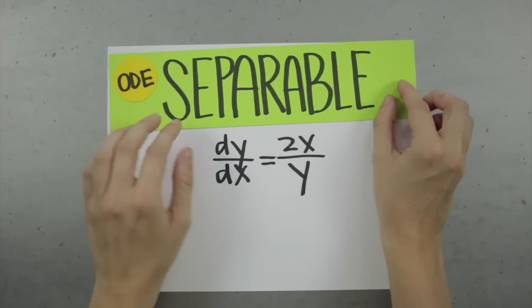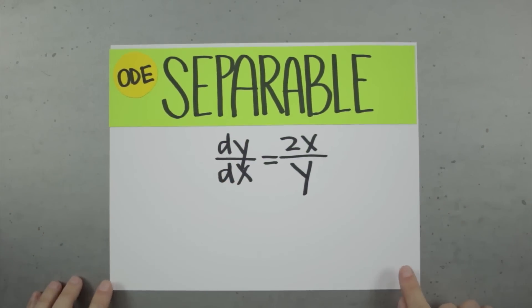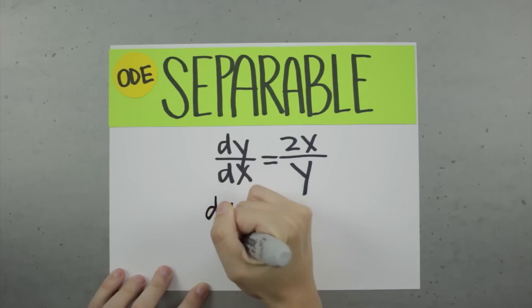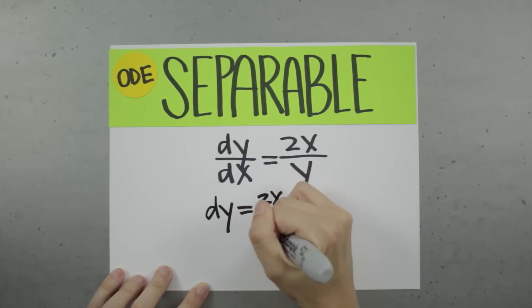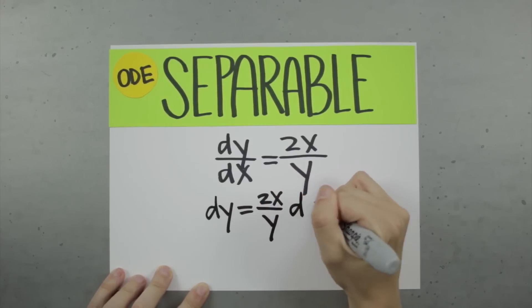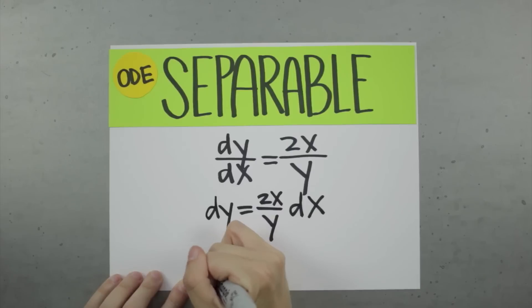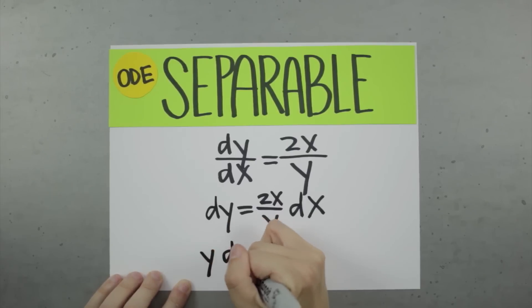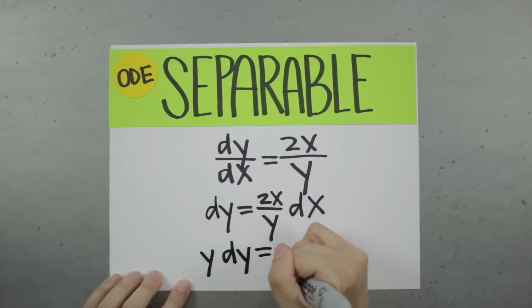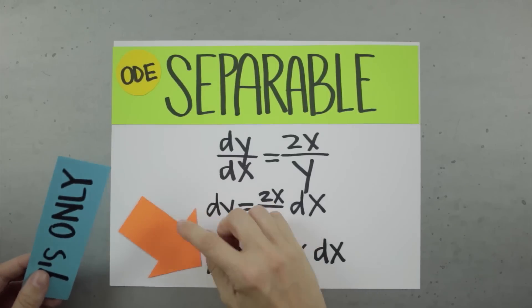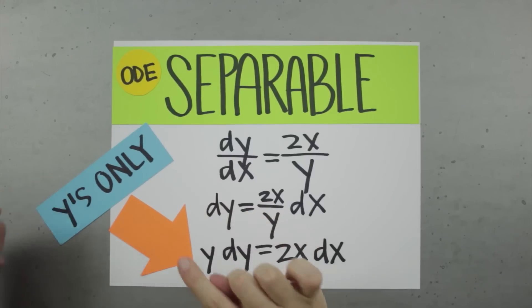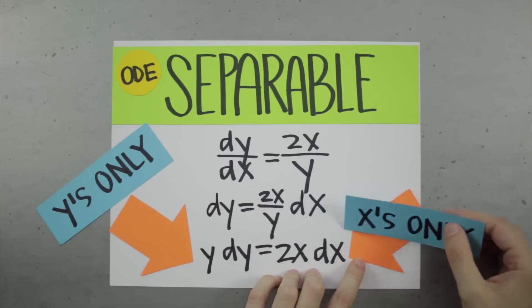A first order separable differential equation usually looks like this. Again, you could easily have one that looks different, but the point is to see whether or not you can separate the variables. If you can separate the variables, then you know you have a separable differential equation. In this equation, I can multiply both sides by dx, then multiply both sides by y. Now I have my y variables separated on the left from my x variables, which are all on the right. That's how I know for sure that this is a separable differential equation.